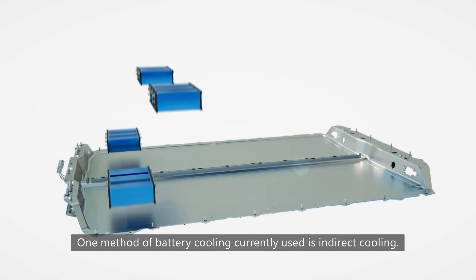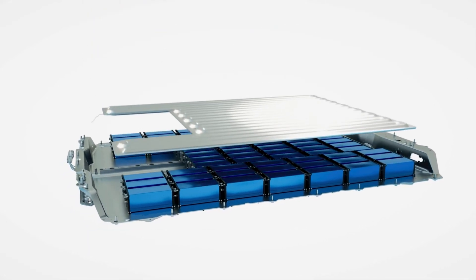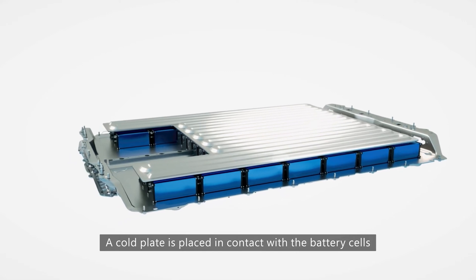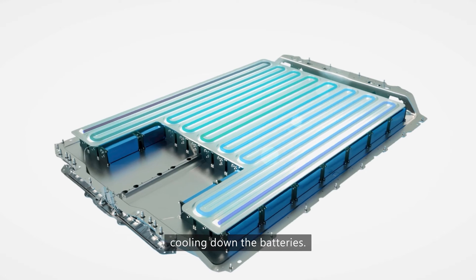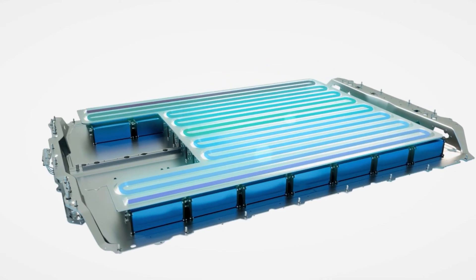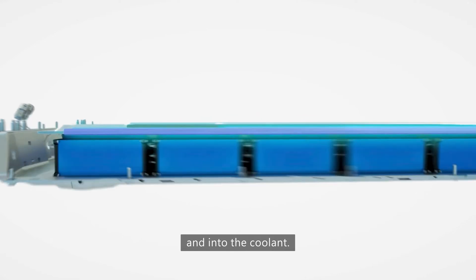One method of battery cooling currently used is indirect cooling. A cold plate is placed in contact with the battery cells and a water glycol coolant is pumped through the plate cooling down the batteries. Heat is conducted from the battery through the plate and into the coolant.